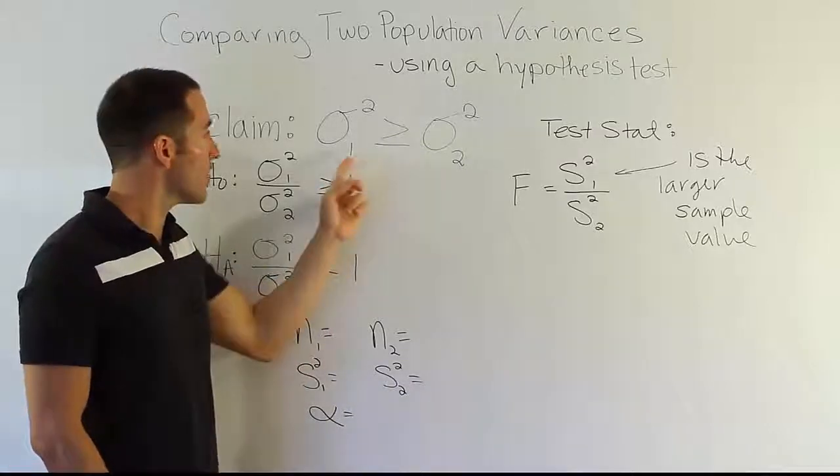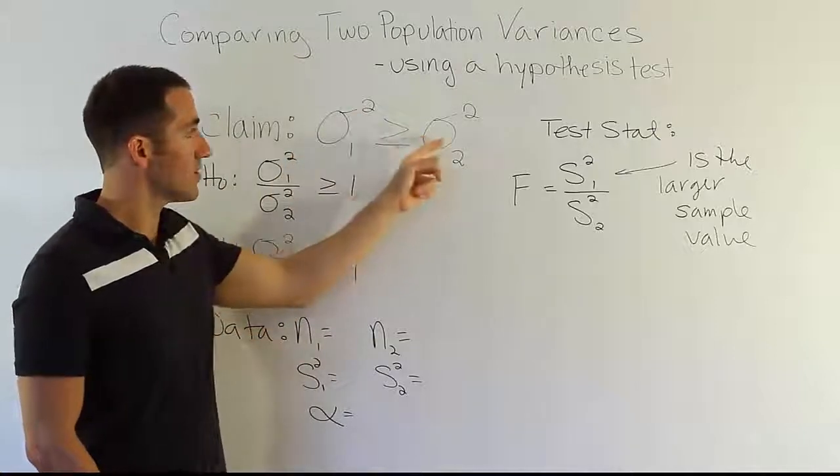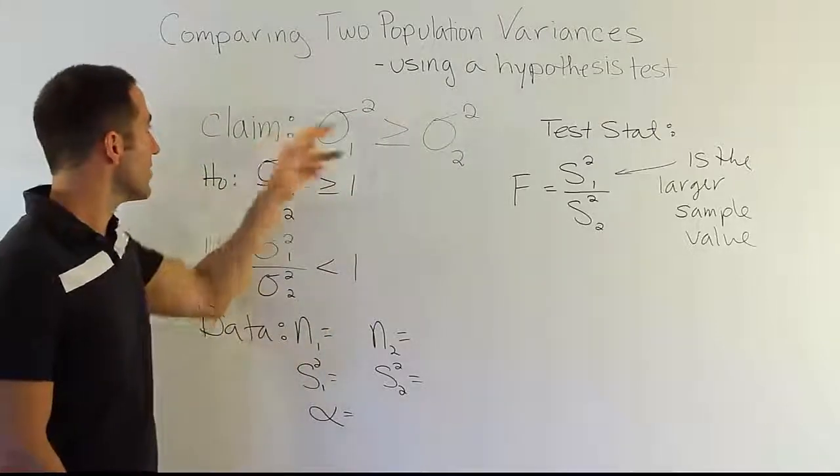These subscripts just indicate for population one, for population two. Remember, sigma squared means variance. Sigma squared means variance. That's the first thing.